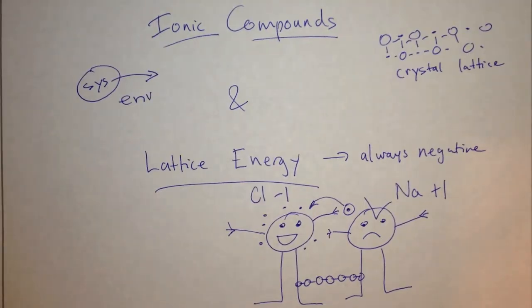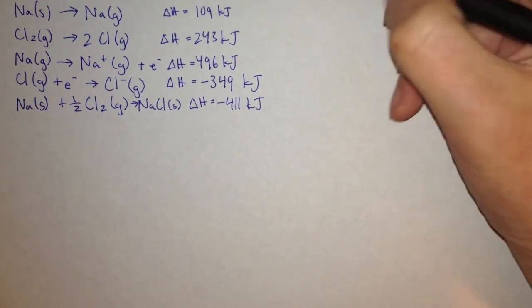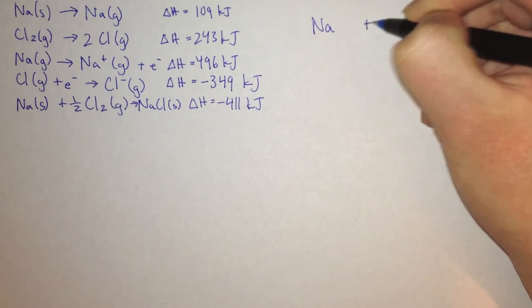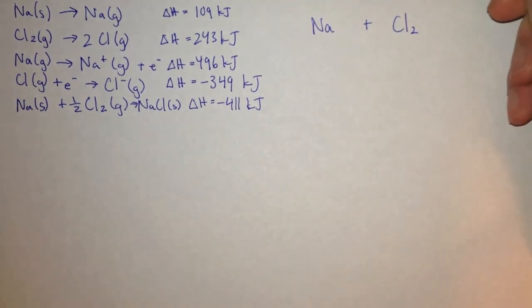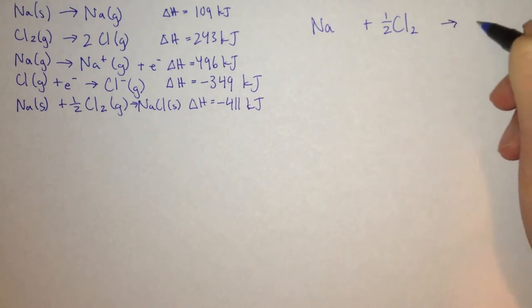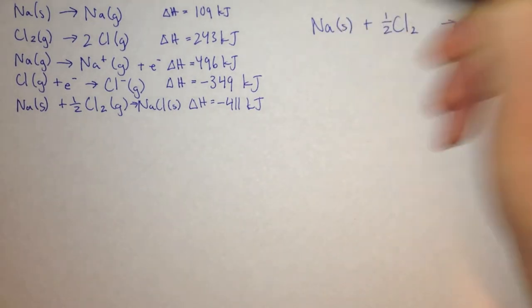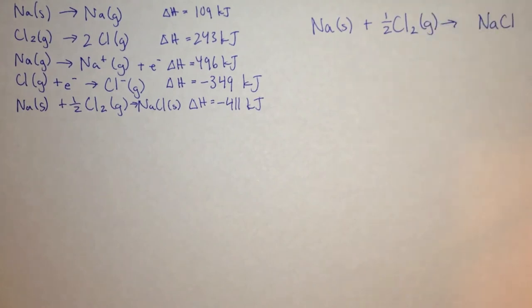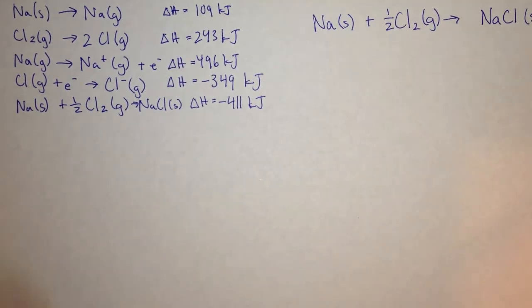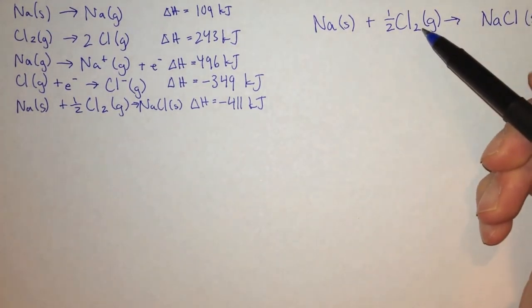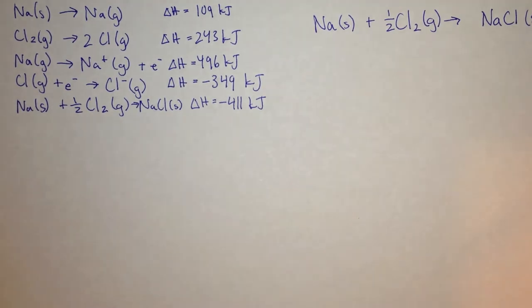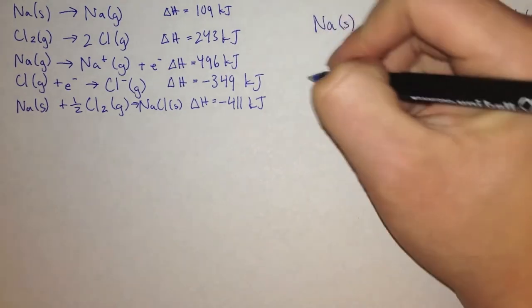With that in mind, let's try to write an equation for the reaction between sodium and chlorine. We take sodium and chlorine — chlorine comes as Cl2 because it's a diatomic, and we only need one half of it because we only need one chlorine atom — and that gives us 1 NaCl. At room temperature, sodium comes as a solid and chlorine comes as a gas, and in the end we want a solid NaCl. In order for sodium and chlorine to react, we have to first make them both into gases and take one electron away from sodium and give it to chlorine.